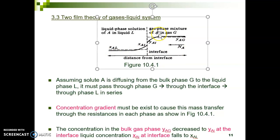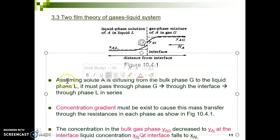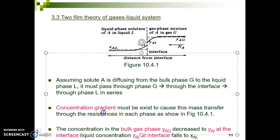As a logic, A is much more concentrated in the gas phase. After some time, A starts to enter the liquid system — but before reaching the liquid, it meets at the interface. Assuming solute A is transferring from the bulk gas phase G to the liquid phase L, it must pass through the gas film to the interface and then into the liquid. A concentration gradient must exist to drive this mass transfer, moving A from the high concentration in the gas to the low concentration in the liquid.